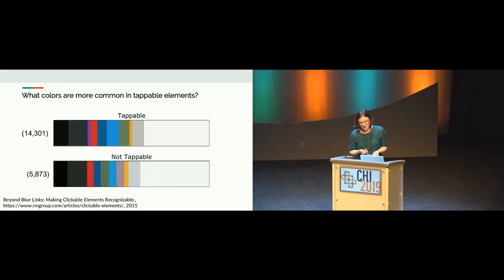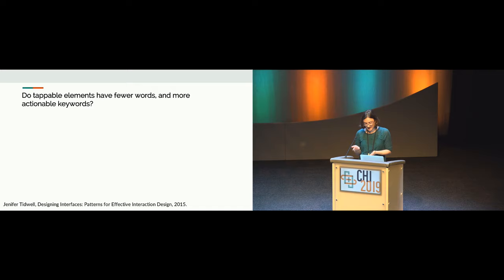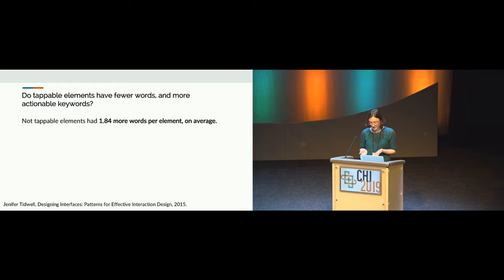Informal design recommendations suggest using color — such as blue or bright colors — to signify tappable elements. We clustered the pixel colors of the full group of tappable and not tappable elements and found that brighter colors were more common in tappable elements, while grays and whites were more common in not tappable elements. Design recommendations also say to label interactive elements with short, actionable phrases. We found that not tappable elements had 1.8 more words per element on average, showing designers are using not tappable elements to display longer informational phrases.